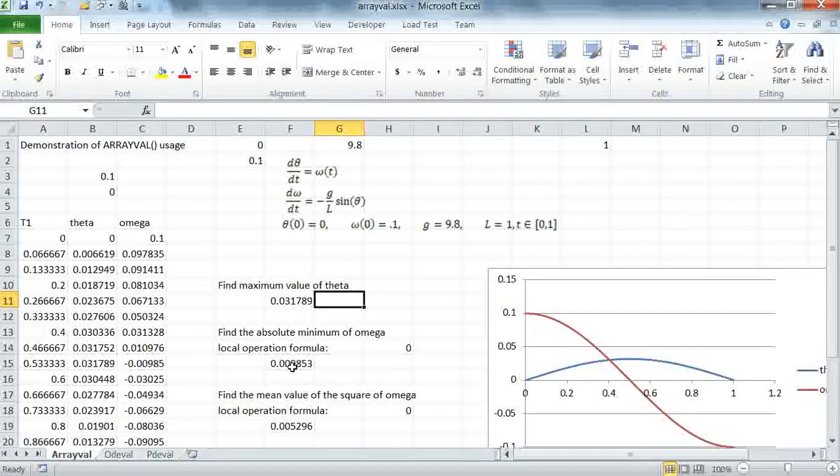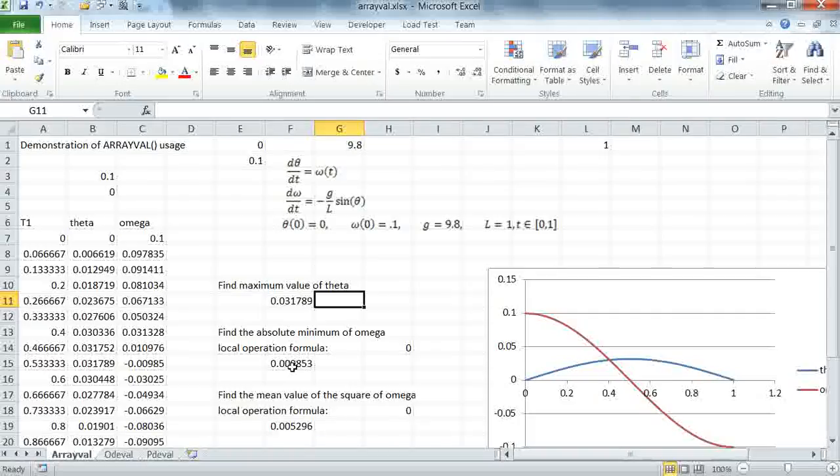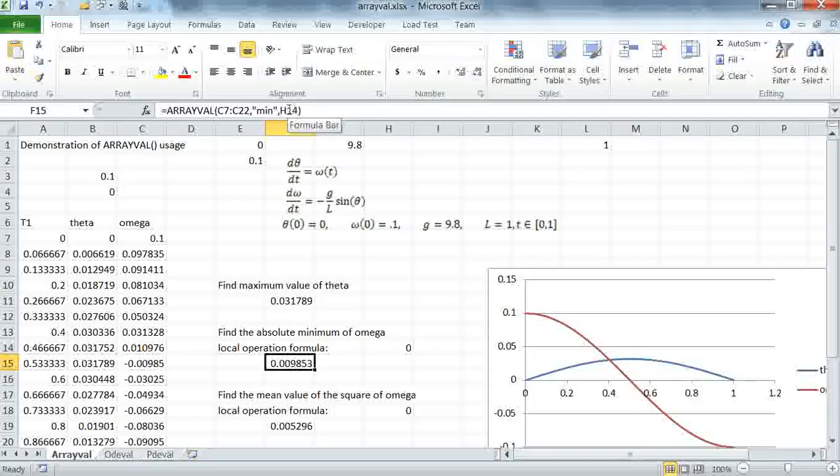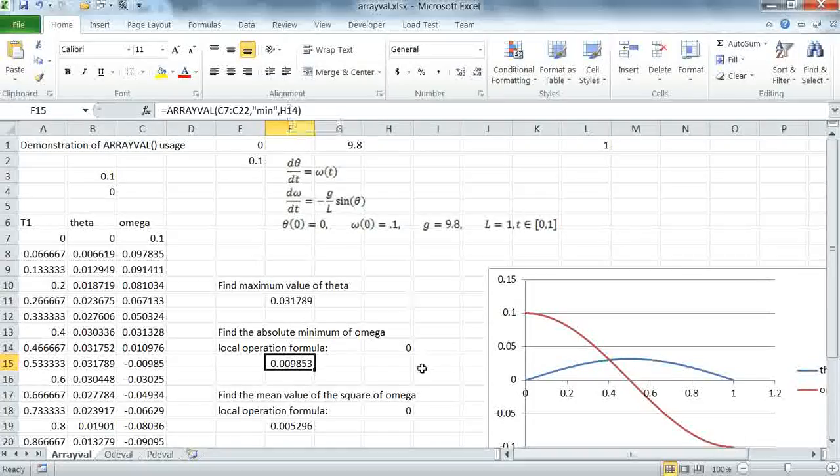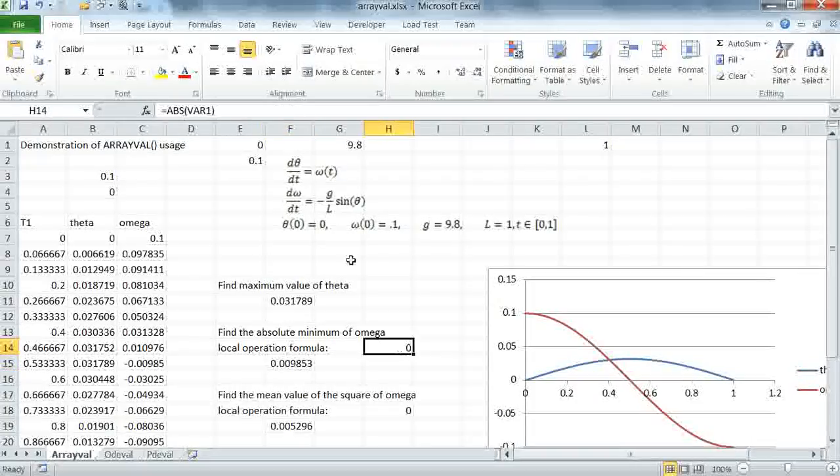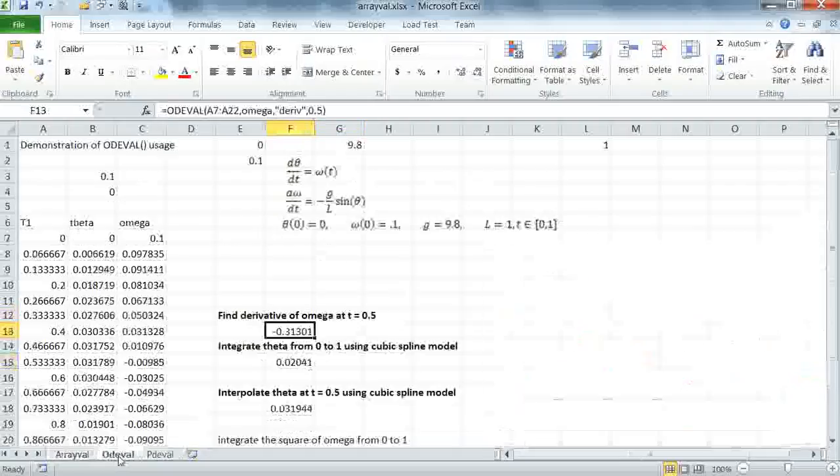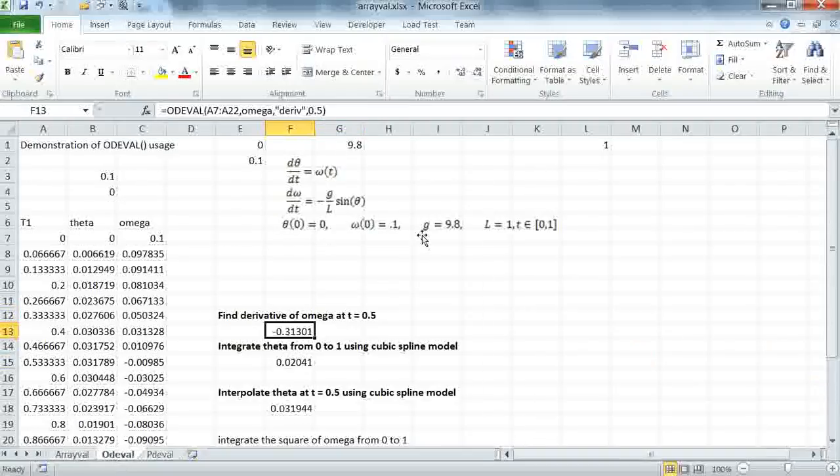In the second example here, I'm finding the absolute minimum of omega. In this case, I'm using the optional argument to pass a local operation, which I define in H14 as absolute var1, and then I'm using the minimum here for my global operation. ODEval works differently as we described.